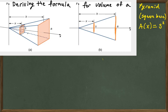We actually have similar triangles here. They both share angle A and they both have a 90-degree angle. By the angle-angle postulate we have similar triangles, so we'll use that to relate s, h, and x together so we can come up with an expression for the area and then integrate.